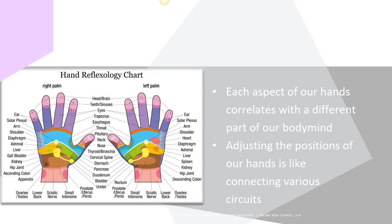The goal of performing a mudra is to access a specific level of awareness, which can in turn impact your body-mind on all levels. Each area of the hand corresponds with an area in the brain and body, and by changing the position of our hands during meditation, we are adjusting the energy flow within our body-mind.